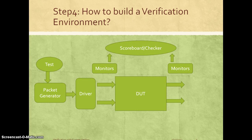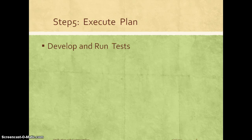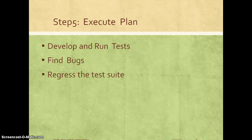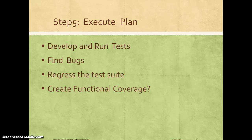Once we build all these components together, the next step is to actually execute that verification plan that we built. We capture all the scenarios that have to be tested in the verification plan, then develop and run all those tests. The process will find bugs in the design, the bugs will get fixed, and we continue this process of developing and running tests until the bugs slow down and the design matures. That process is also known as regression, where we build this test suite and then continue to regress it at regular intervals in the design phase.